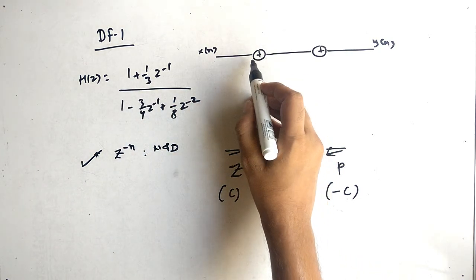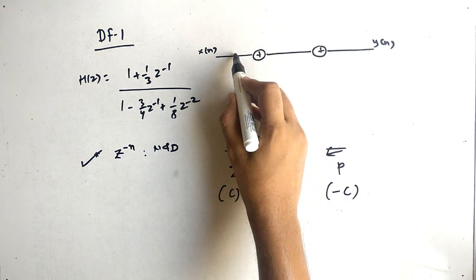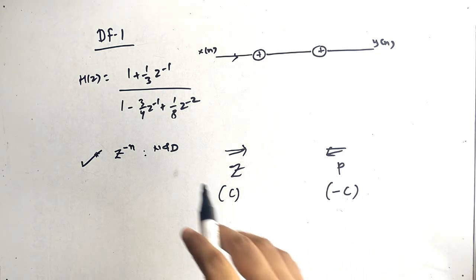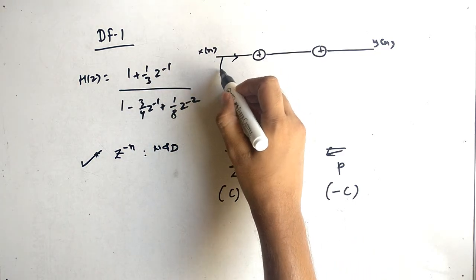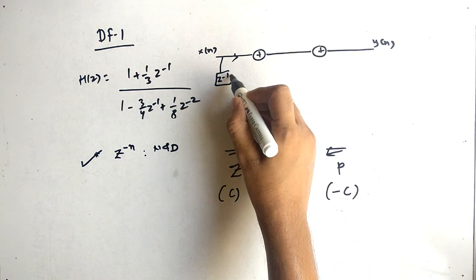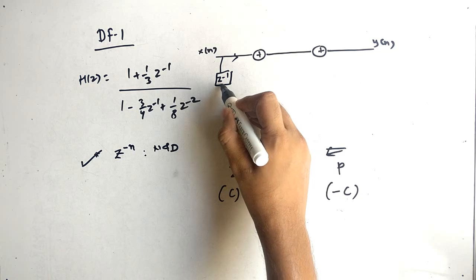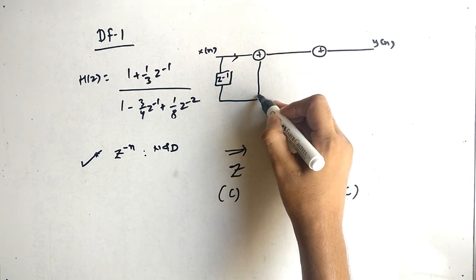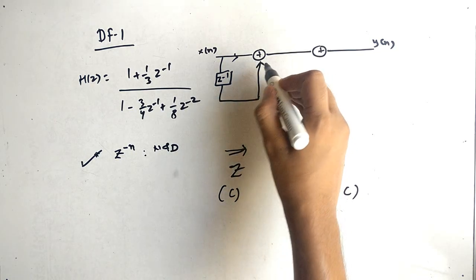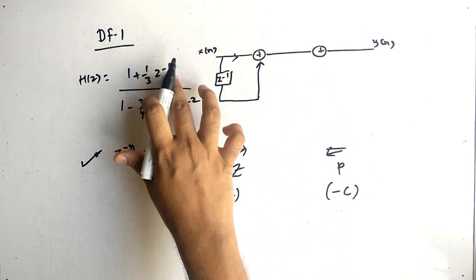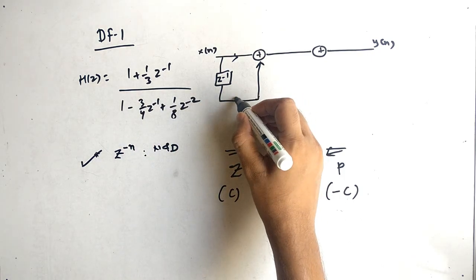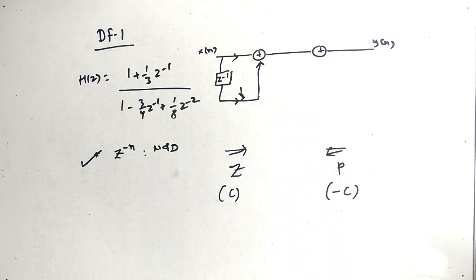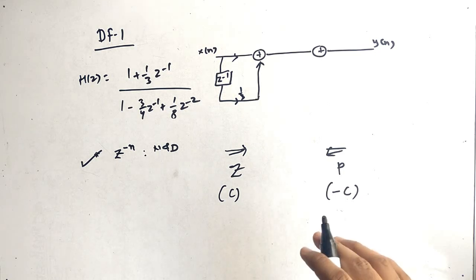The first term is 1, so 1 will go as it is. Then we have a delay of z⁻¹, and both terms are added. The coefficient remains as it is, so the multiplier is 1/3. Now let's talk about the poles.